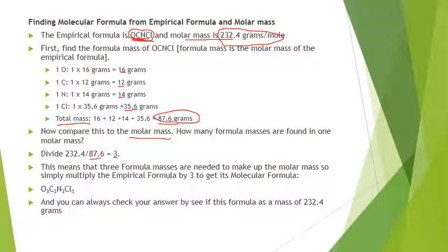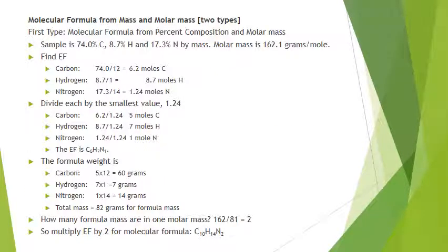You take the molar mass and divide by the formula weight — you get 3. So there are three empirical formulas in every molecular formula. Take the empirical formula and multiply every subscript by 3 to get the molecular formula. To check your answer, find the mass of the molecular formula and verify it's close to the given molar mass: 3×16 + 3×12 + 3×14 + 3×35.6 should equal approximately the molar mass. Sometimes the formula mass equals the molar mass, and you don't need to change the formula at all.